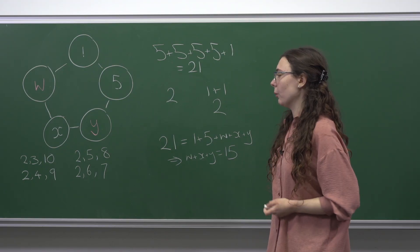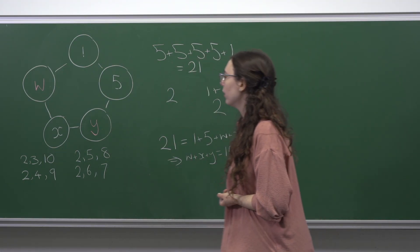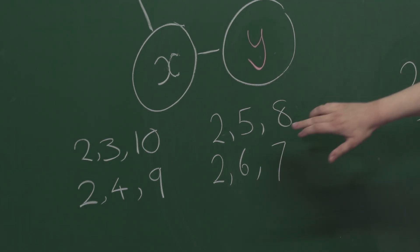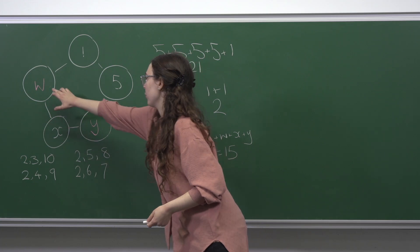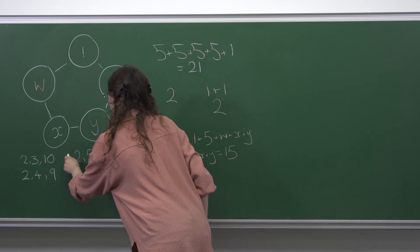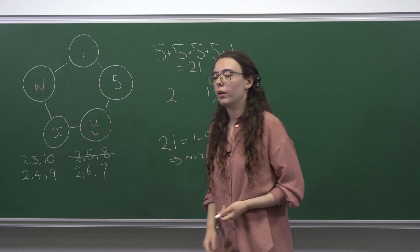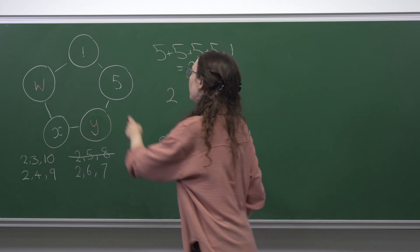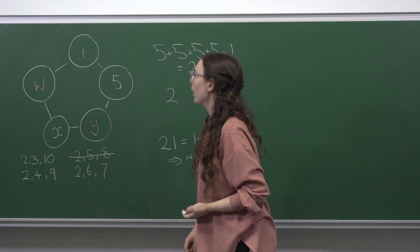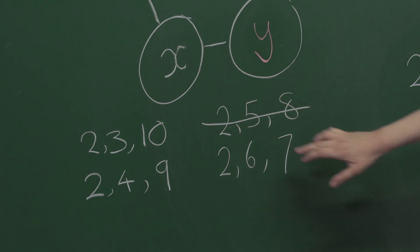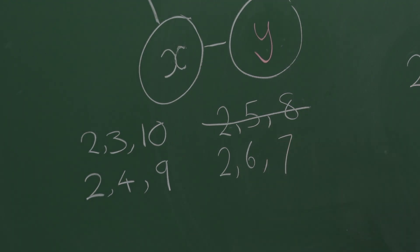We can quickly eliminate two options. The set {2, 5, 8} is invalid because we already have a 5 in the diagram. We can also eliminate {2, 6, 7} because 1 plus 5 already equals 6, so having an extra 6 would mean two of our sums are the same. This narrows it down to two options.